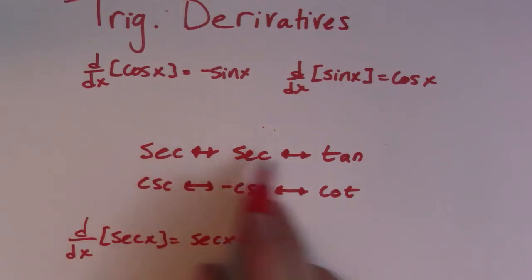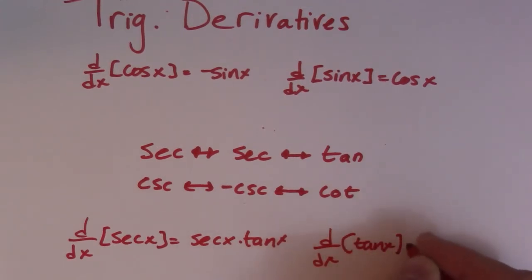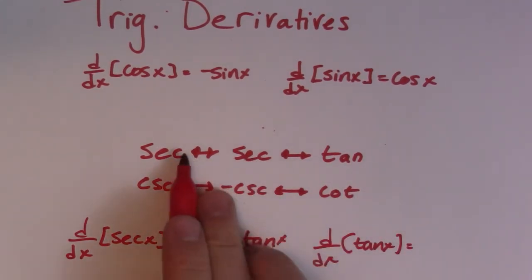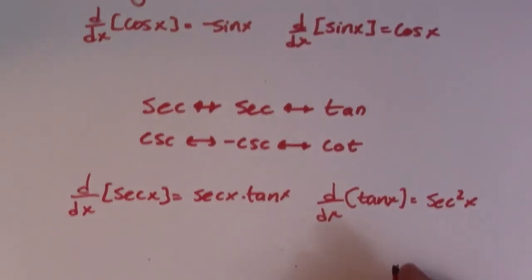So the derivative of secant is secant tan. And then the derivative of tan x, let's just go the other way. So secant times secant, which is secant squared x, just like that.